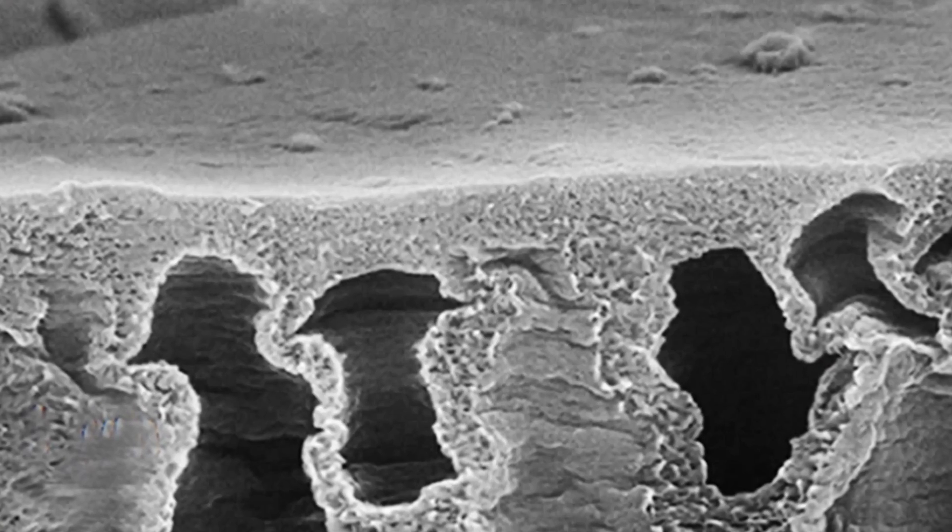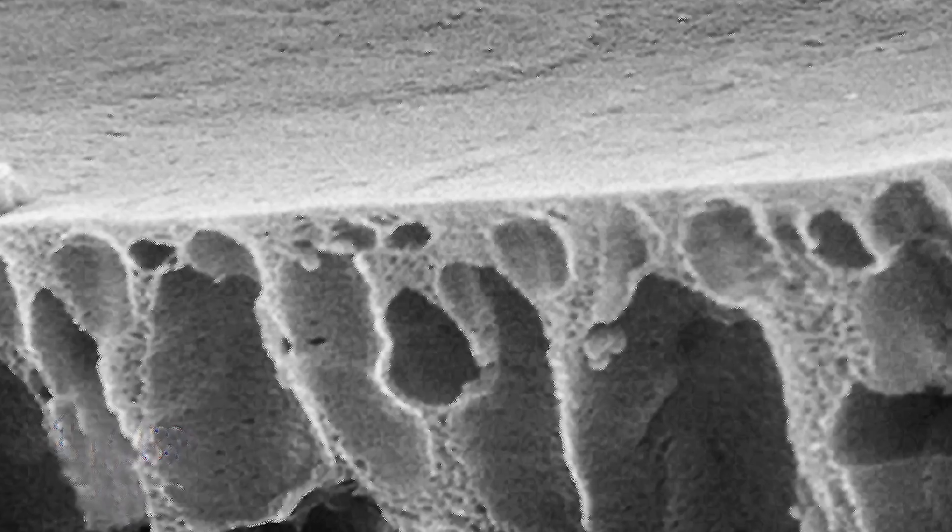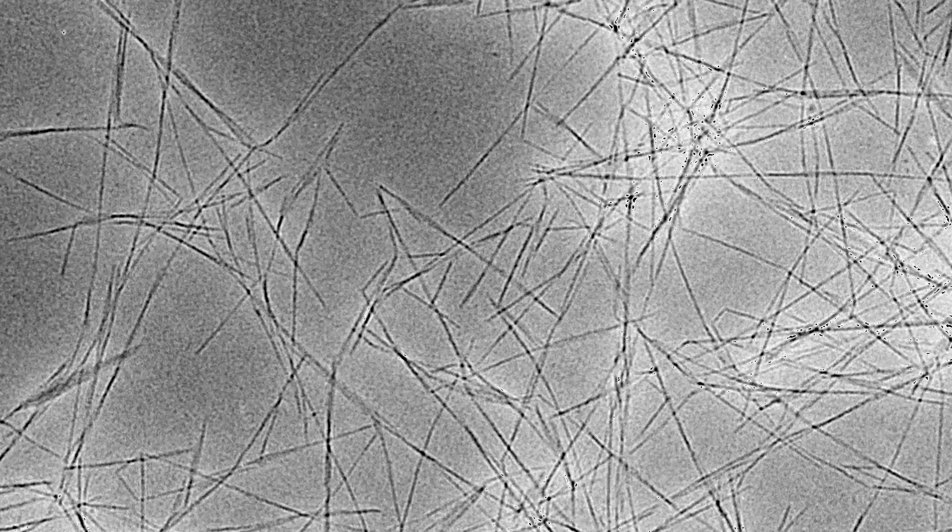Traditional water filters are made of polymer membranes with tiny pores to filter out bacteria and viruses. Shao's filters are made of fibers that are all tangled up, and the pores are the natural gaps between the strands.